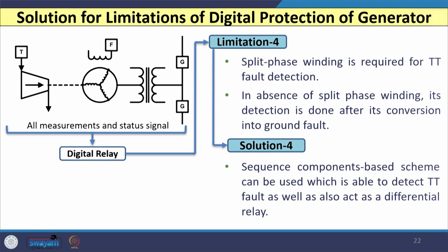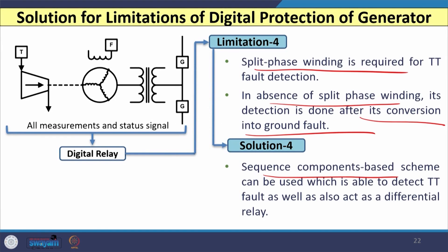The solution for the fourth limitation is to use sequence components-based schemes capable of detecting both stator faults and turn-to-turn faults as a single unit. In this lecture, we discussed backup protection, stator and rotor ground fault protection, out-of-step protection, loss of field protection, over-frequency and under-frequency protection, and the problems and partial solutions for digital relay limitations. Thank you very much.